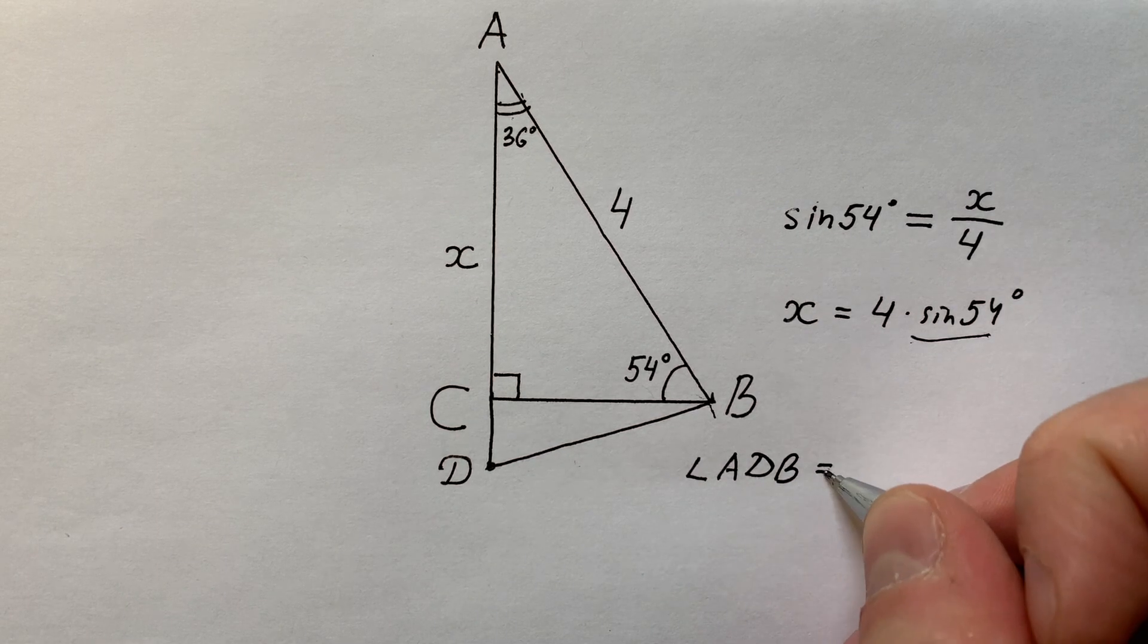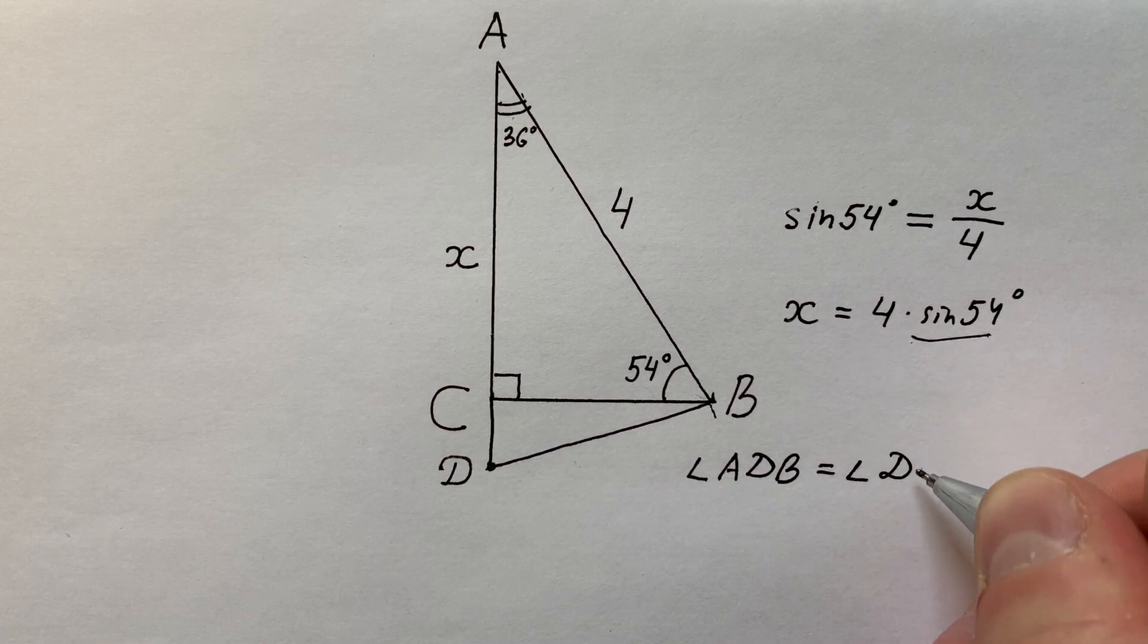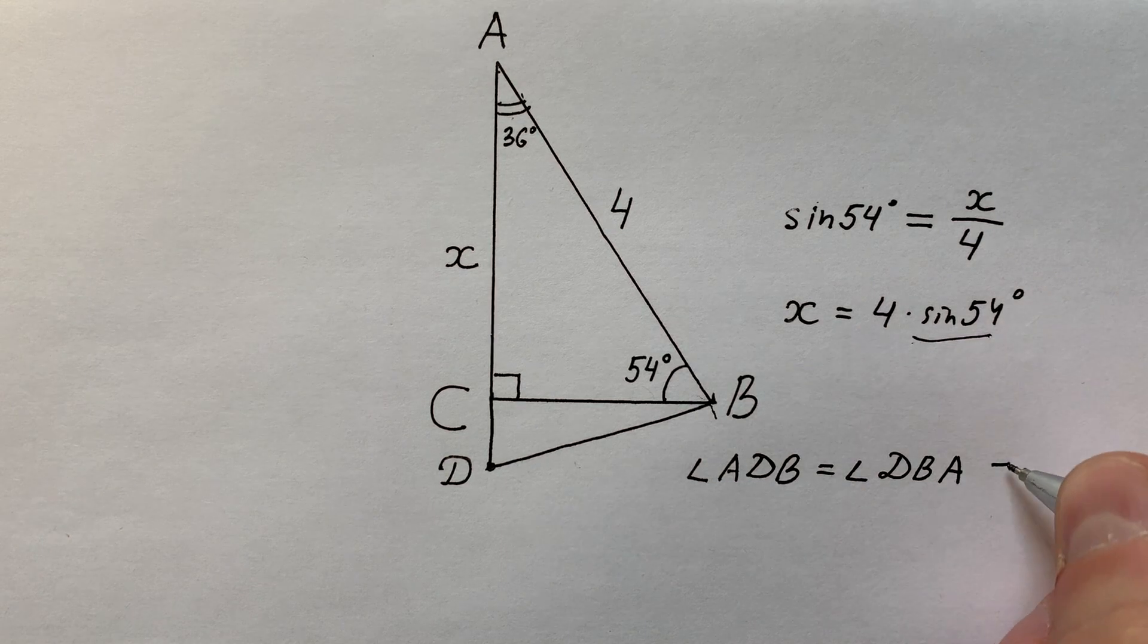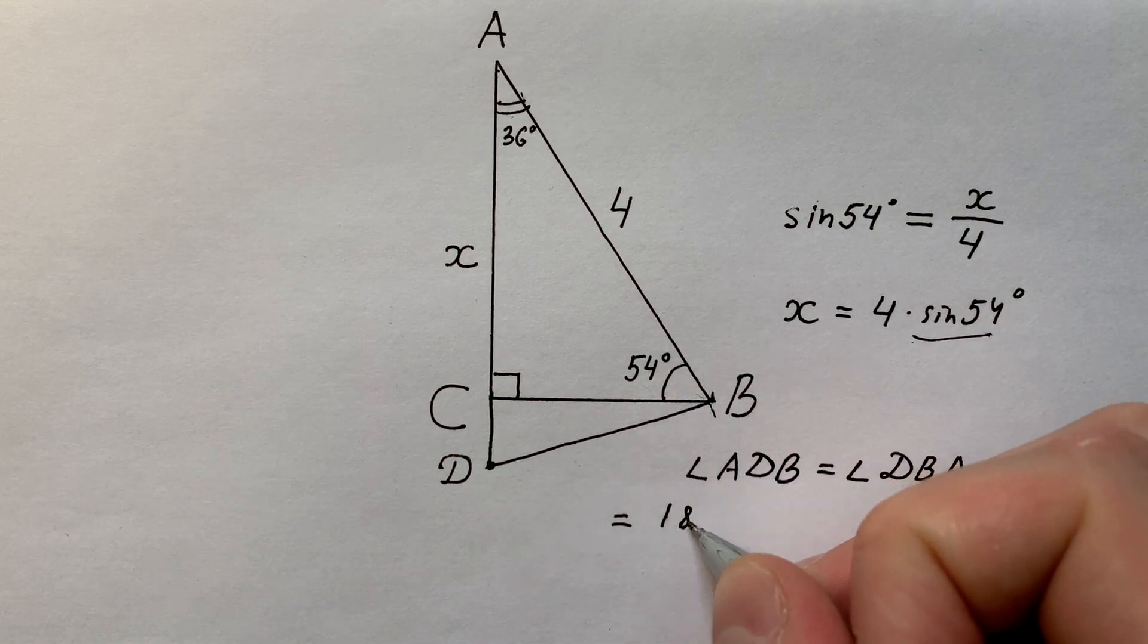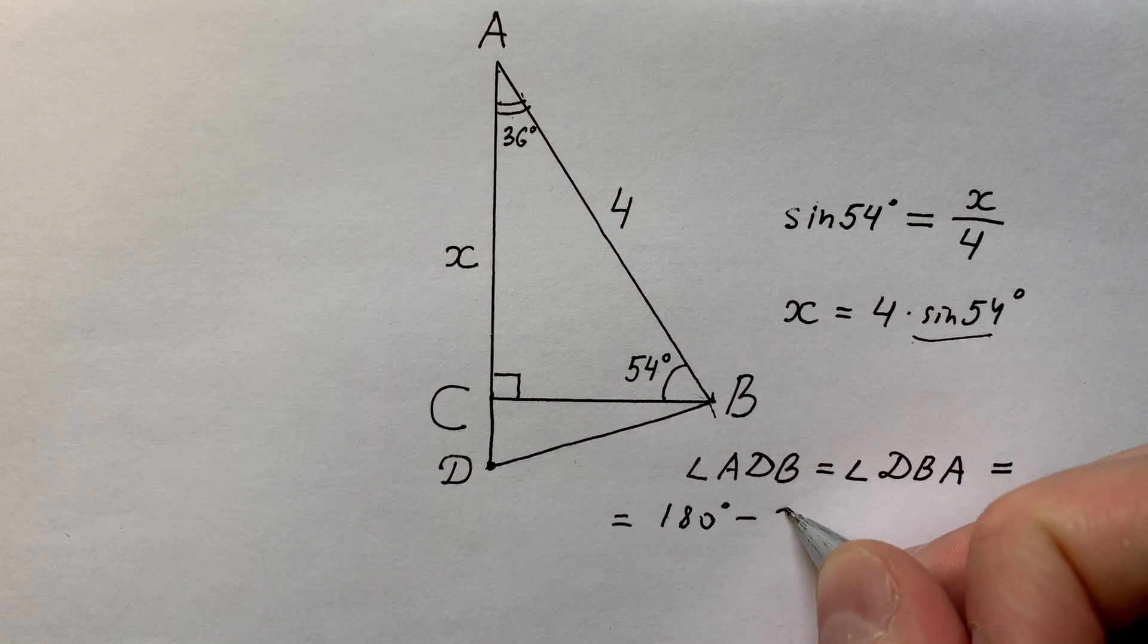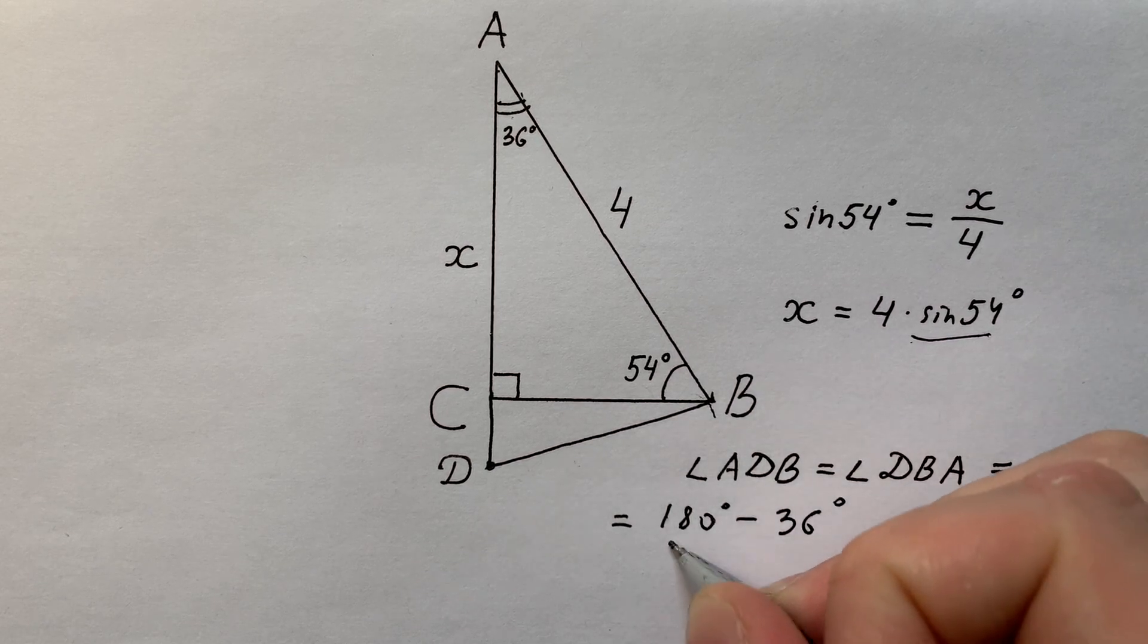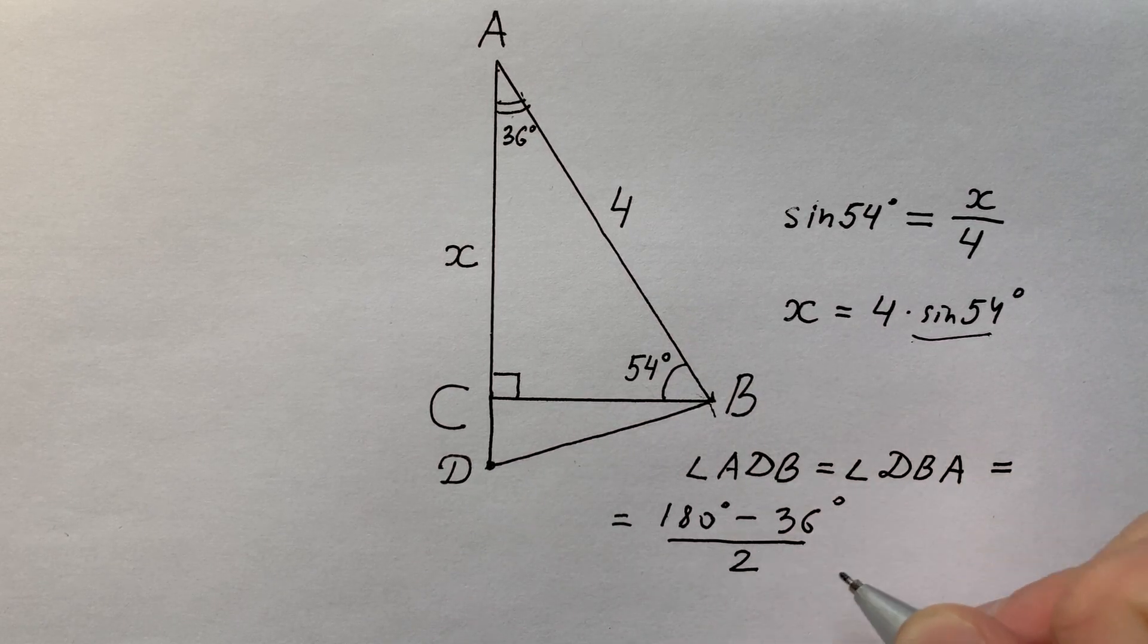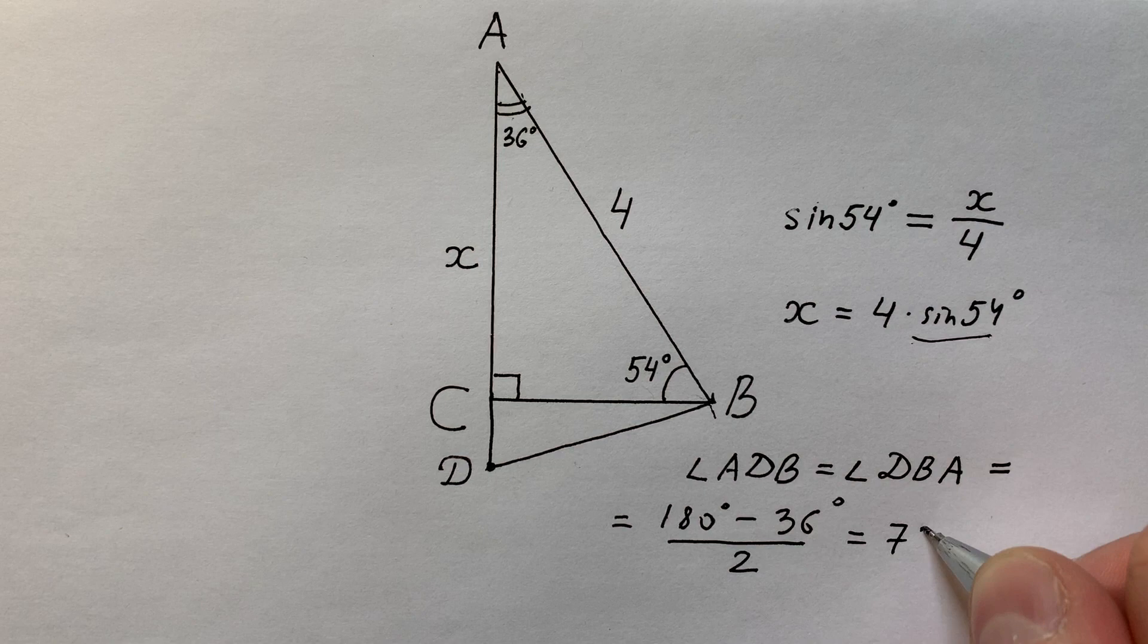is equal to angle DBA, and it equals 180 degrees minus 36 degrees divided by 2, and it equals 72 degrees.